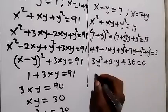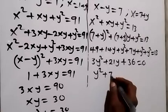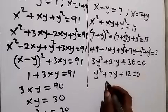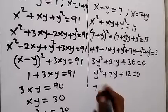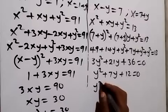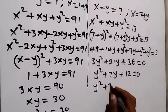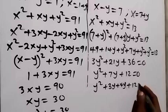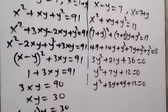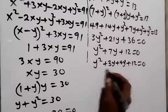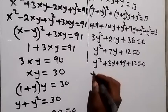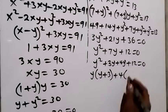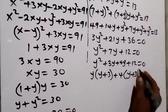Dividing through by 3, this becomes y squared plus 7y plus 12 equals 0. We can factorize this as y squared plus 3y plus 4y plus 12 equals 0. Grouping: y times y plus 3, plus 4 times y plus 3 equals 0.